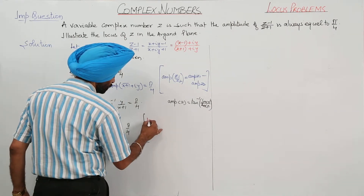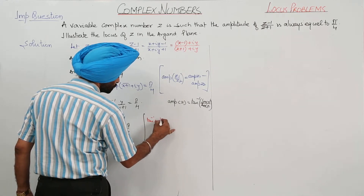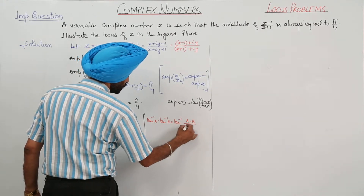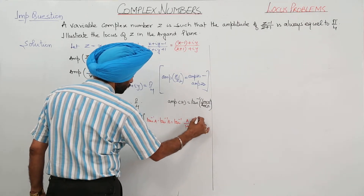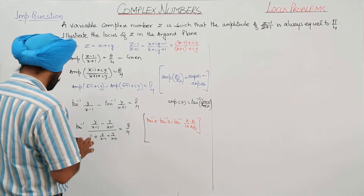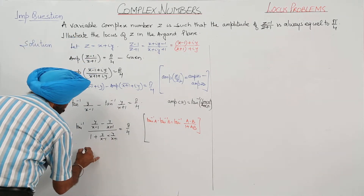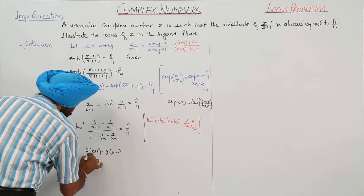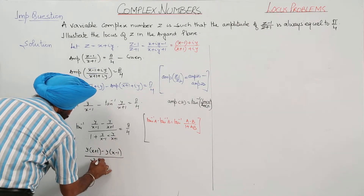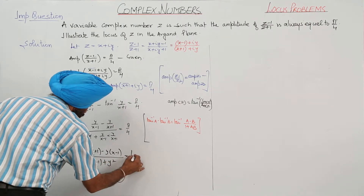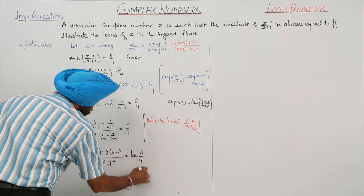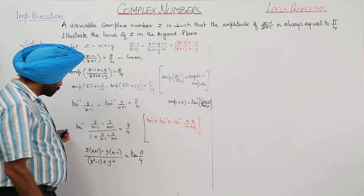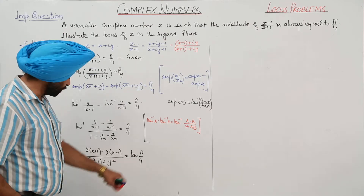Using the formula tan inverse (a − b) upon (1 + ab), we simplify the numerator: x plus 1 minus (x minus 1), giving 2y over (x² minus 1 plus y²). Taking tan on both sides, tan inverse and tan cancel, so tan(π/4) equals 1. Therefore the expression equals 1.